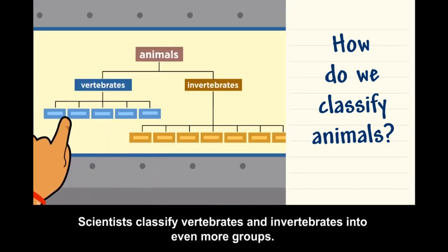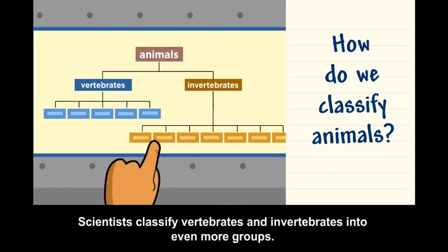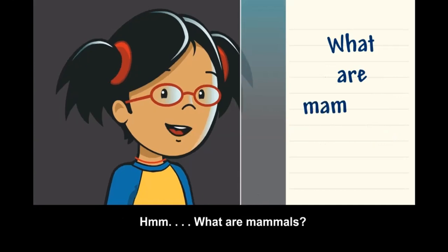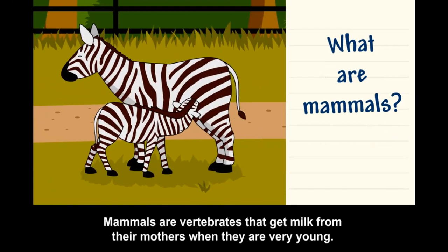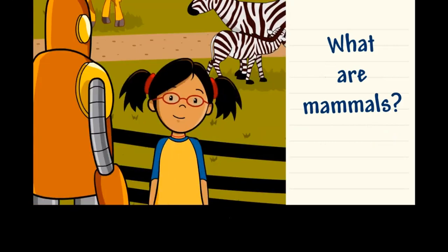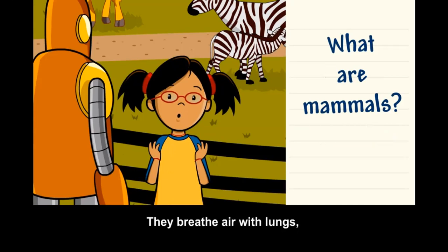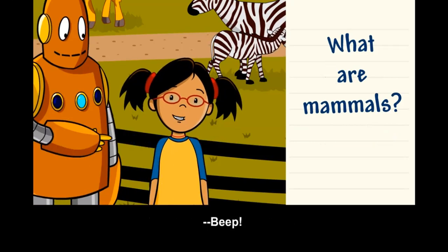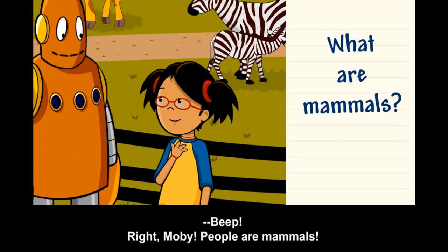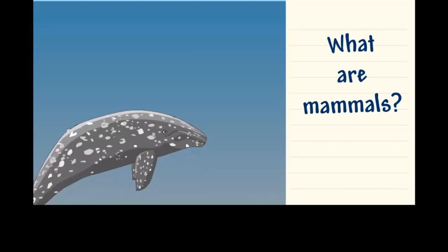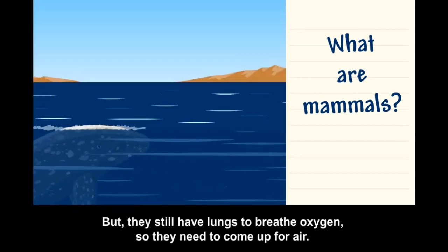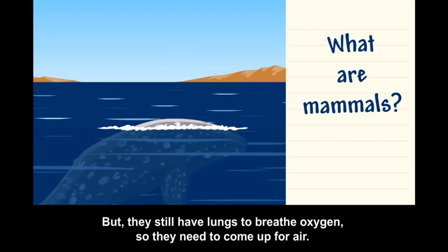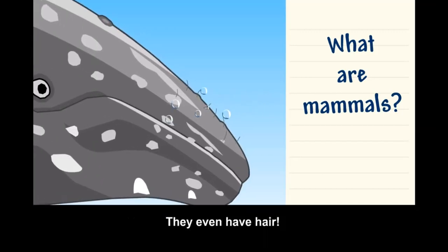Scientists classify vertebrates and invertebrates into even more groups. What are mammals? Mammals are vertebrates that get milk from their mothers when they are very young. They breathe air with lungs and have hair or fur. People are mammals. Some mammals live in water, like whales, but they still have lungs to breathe oxygen, so they need to come up for air — they even have hair.